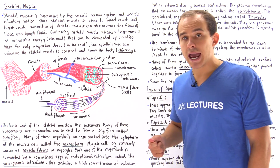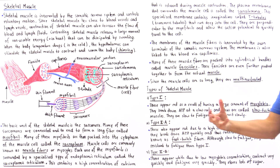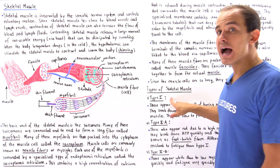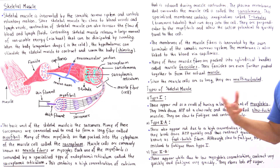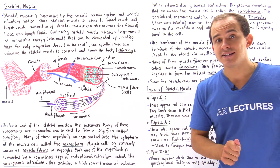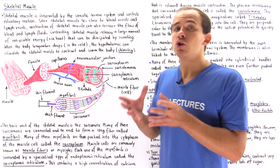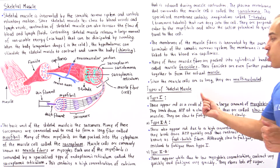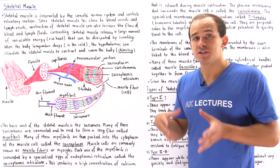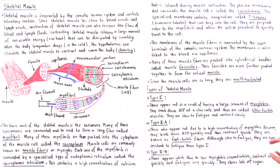Type 2a and type 2b are known as fast twitch skeletal muscles because they contract quickly. Just like type 1, type 2a also appears red under the microscope because it also has a high concentration of myoglobin. However, type 2a breaks down ATP at a high rate, which is exactly why it contracts quickly. Although type 2a is still relatively slow to fatigue, it has lower resistance to fatigue than type 1. Type 1 muscles resist fatigue at a very high percentage, while type 2a resists fatigue at a lower rate.